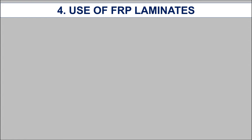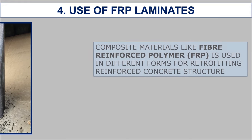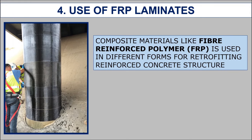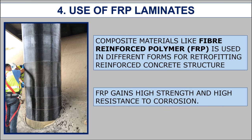The next method is the use of FRP laminates. Composite materials like fiber reinforced polymer (FRP) in different forms have been used for retrofitting reinforced concrete structures for past decades. FRP gains high strength and high resistance to corrosion, and is light in weight, so it can be applied easily. FRP can be used as laminates, sheets, or rods over the RC structure. The efficiency of retrofitting can be increased by pre-stressing the fibers. FRP composites offer a fast and easy retrofitting technique.